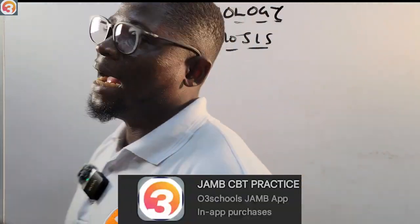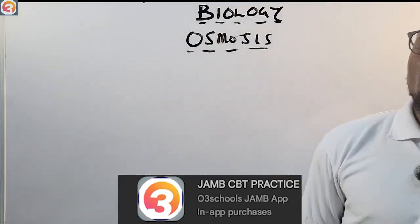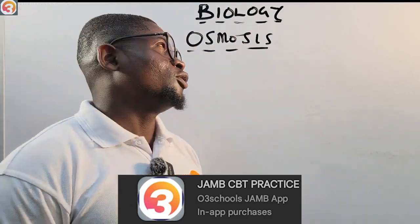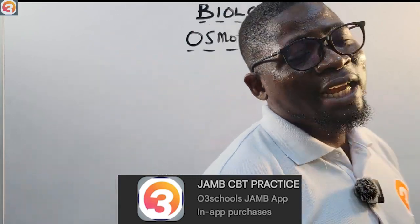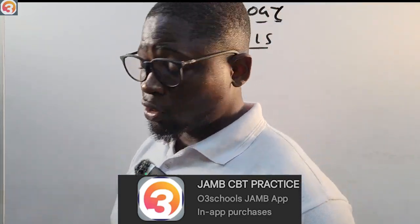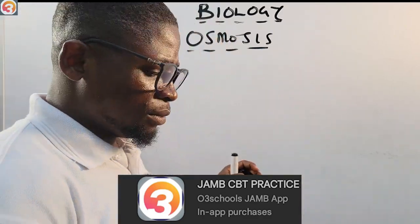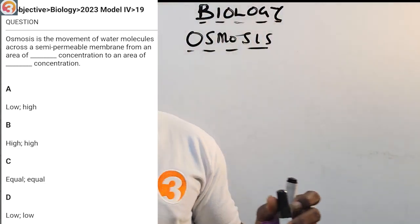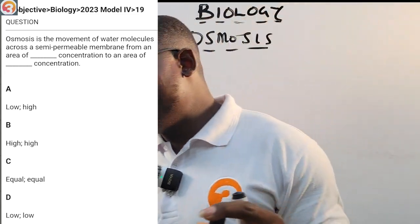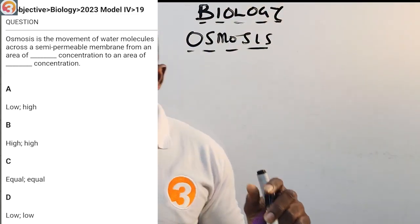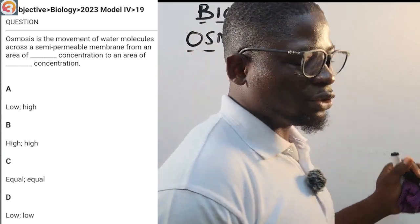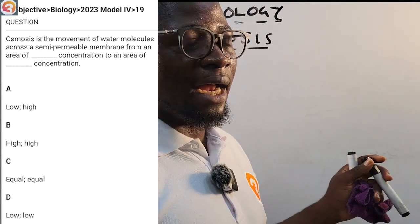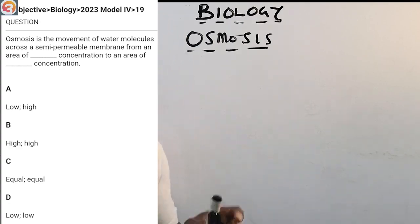This tutorial is brought to you by the All3Schools JamUp app — the one and only JamUp, the best CBT practice app for all students. Now, here is a 2023 question number 19: osmosis is the movement of water molecules across a semi-permeable membrane from an area of dash concentration to an area of dash concentration. Options are: A, low and high; B, high and high; C, equal and equal; D, low and low.